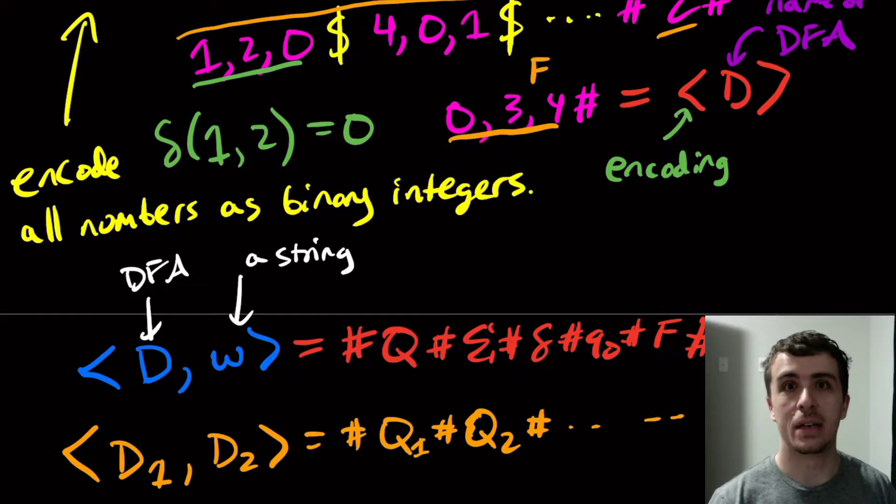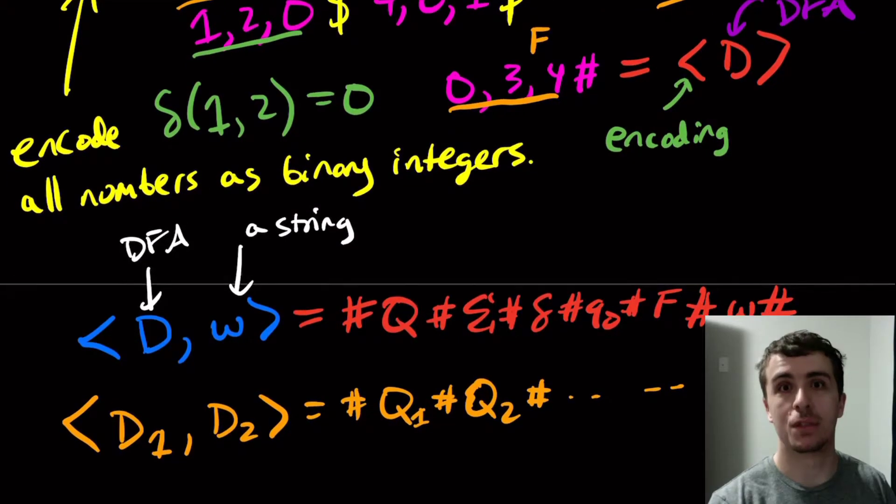Hi, welcome to another edition of Easy Theory. So we've talked about encodings, now let's talk about some problems for DFAs.